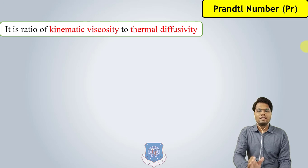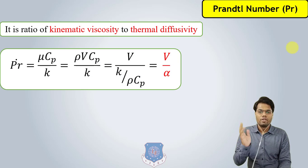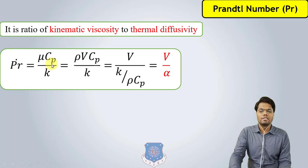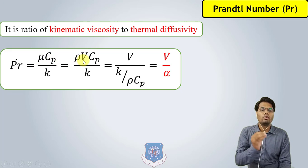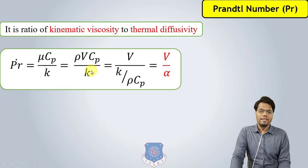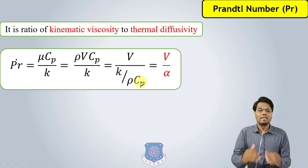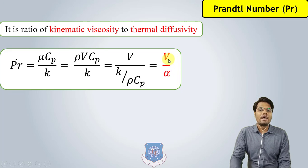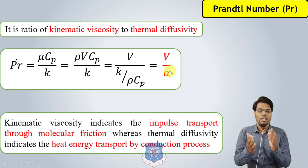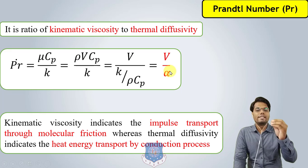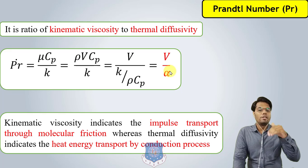The second is the Prandtl number. We derived this as one pi-term: it is the ratio of kinematic viscosity to thermal diffusivity. In our previous video we derived μCp/K and named this dimensionless number the Prandtl number. If instead of dynamic viscosity μ we write ρν, we get ρνCp/K, and rearranging gives ν/(K/ρCp). Since K/ρCp is thermal diffusivity denoted by α, the Prandtl number simplifies to ν/α, where ν is kinematic viscosity and α is thermal diffusivity.